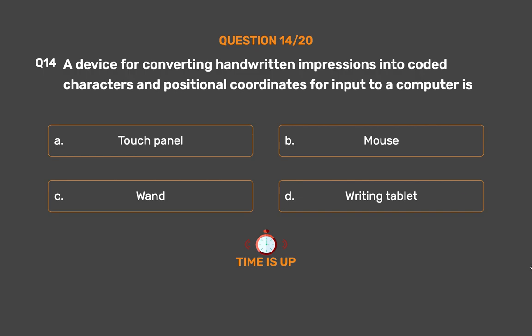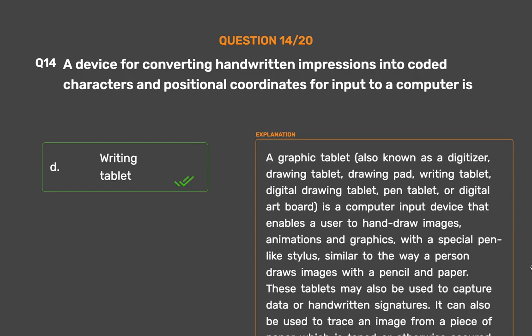The correct answer is Option D: Writing tablet. A graphic tablet, also known as a digitizer, drawing tablet, drawing pad, writing tablet, digital drawing tablet, pen tablet, or digital art board, is a computer input device that enables a user to hand-draw images, animations and graphics with a special pen-like stylus, similar to the way a person draws images with a pencil and paper. These tablets may also be used to capture data or handwritten signatures, and can be used to trace an image from a piece of paper secured to the tablet surface. Capturing data this way — by tracing or entering the corners of linear polylines or shapes — is called digitizing.